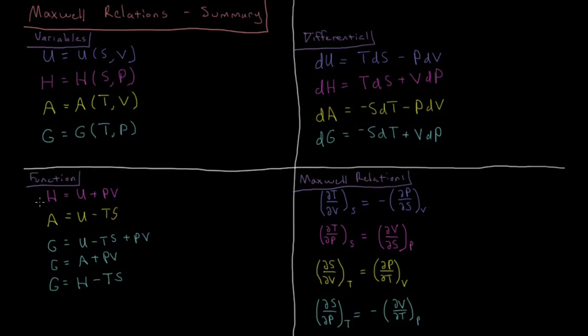The functions are defined by their relationship to internal energy U. Enthalpy is U plus PV, the Helmholtz energy is U minus TS, the Gibbs energy can be defined as the internal energy minus TS plus PV, or by the Helmholtz energy plus PV, or the much more common way as enthalpy minus TS.